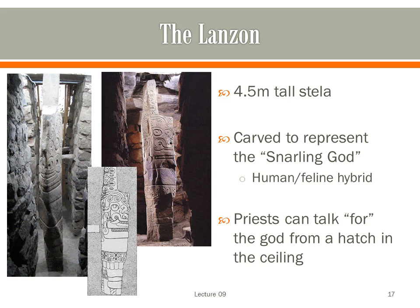The centerpiece of the temple was the Lanson — a 4.5 meter tall stone stela, or carved stone. In the deepest chamber of the temple, the Lanson was carved to represent the Chavin deity, sometimes referred to today as the Snarling God. This fearsome deity combined human and feline features, its teeth drawn back in a dangerous-looking snarl. The Lanson's base was buried below the floor and it loomed so large that its top rose through an opening in the ceiling to the level above. A special hatch in the ceiling allowed a hidden priest in the chamber above to speak for the god, creating the sense that the massive stone beast was aware and active.